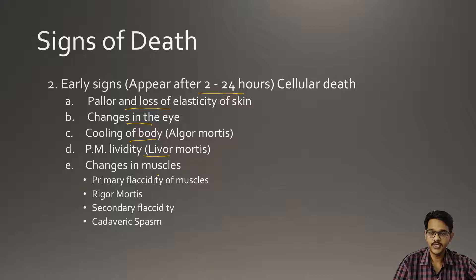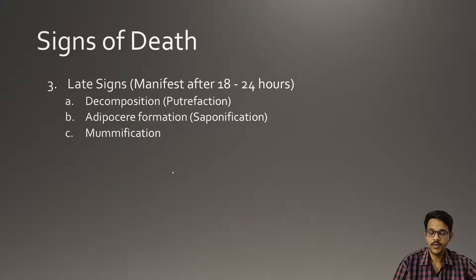Changes in the muscles: first there is primary flaccidity of muscles, then there is rigor mortis, then there is secondary flaccidity, and also cadaveric spasm. So these are early changes which occur within 24 hours.